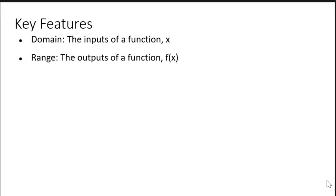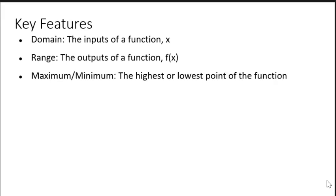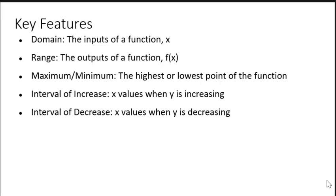The range lists the outputs of the function. The minimum or maximum point of the function is the ordered pair that lists the highest or lowest point of the function. Quadratic functions have either a maximum or a minimum. The interval of increase are the x values where the function or outputs of the function are increasing, and the interval of decrease are the x values where the function is decreasing.